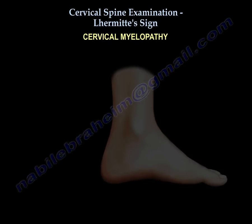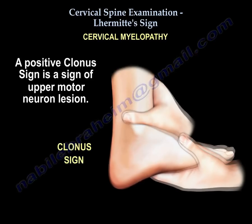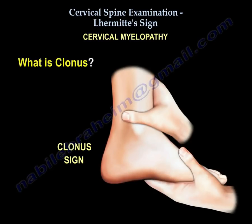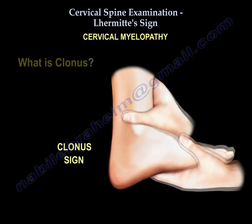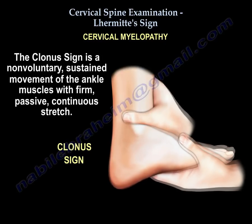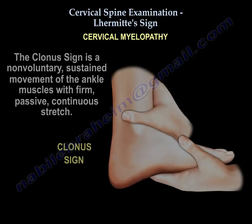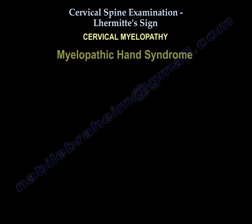Clonus is another sign of upper motor neuron lesion. It is a non-voluntary sustained movement of the ankle muscles with firm passive continuous stretch.